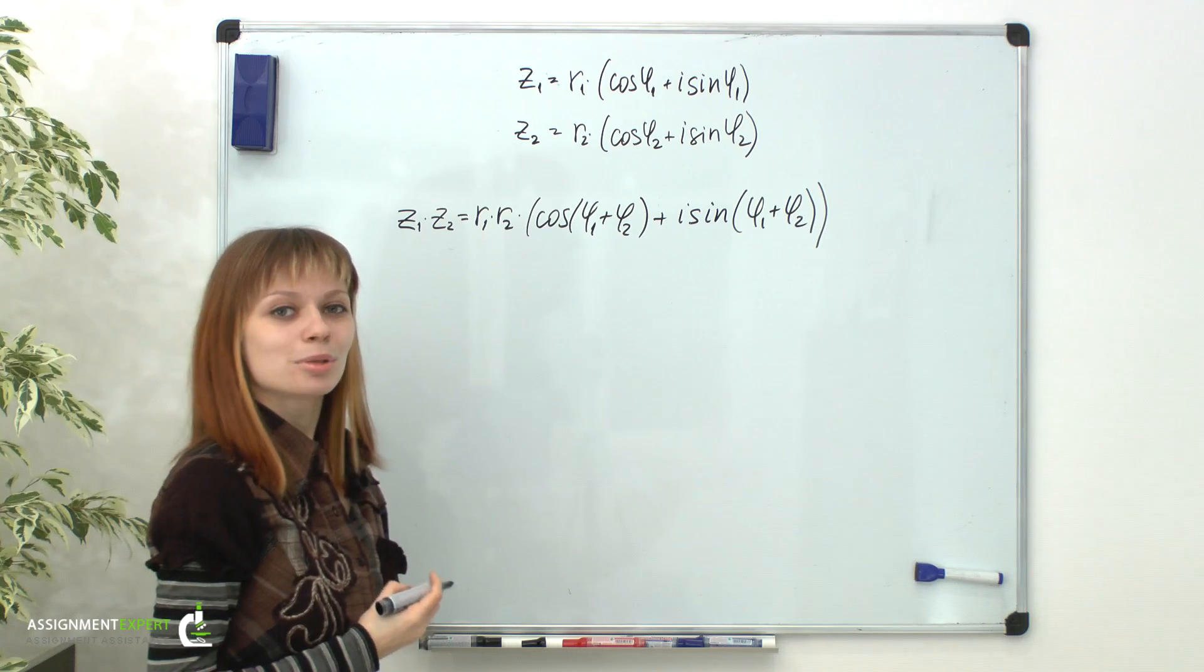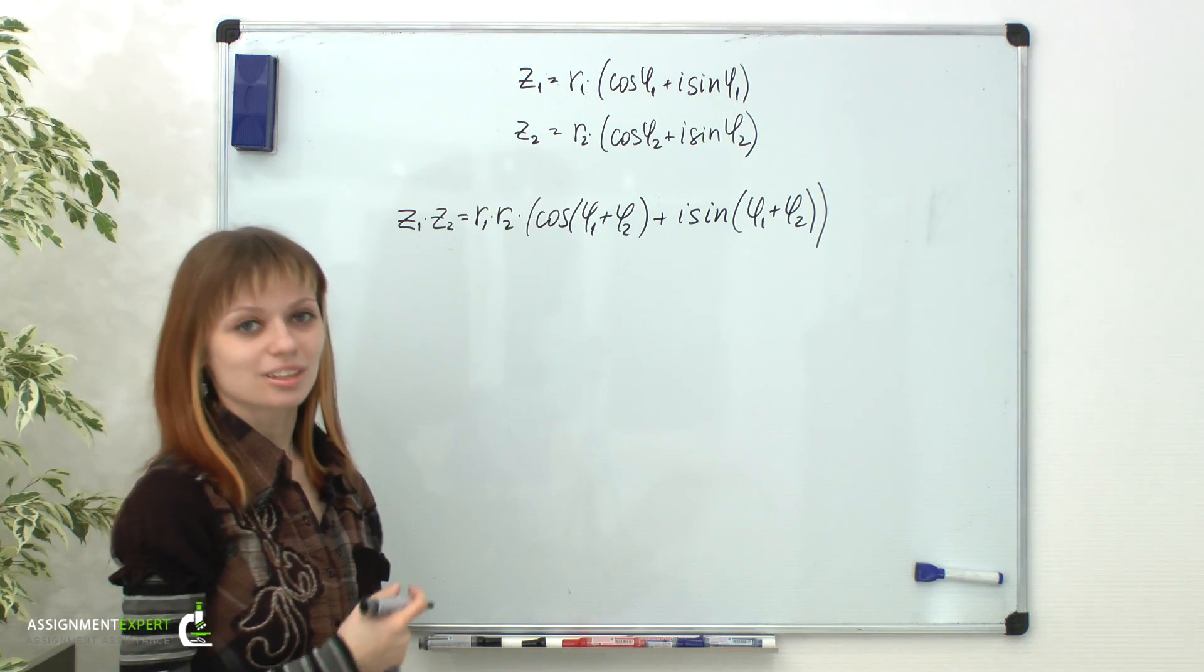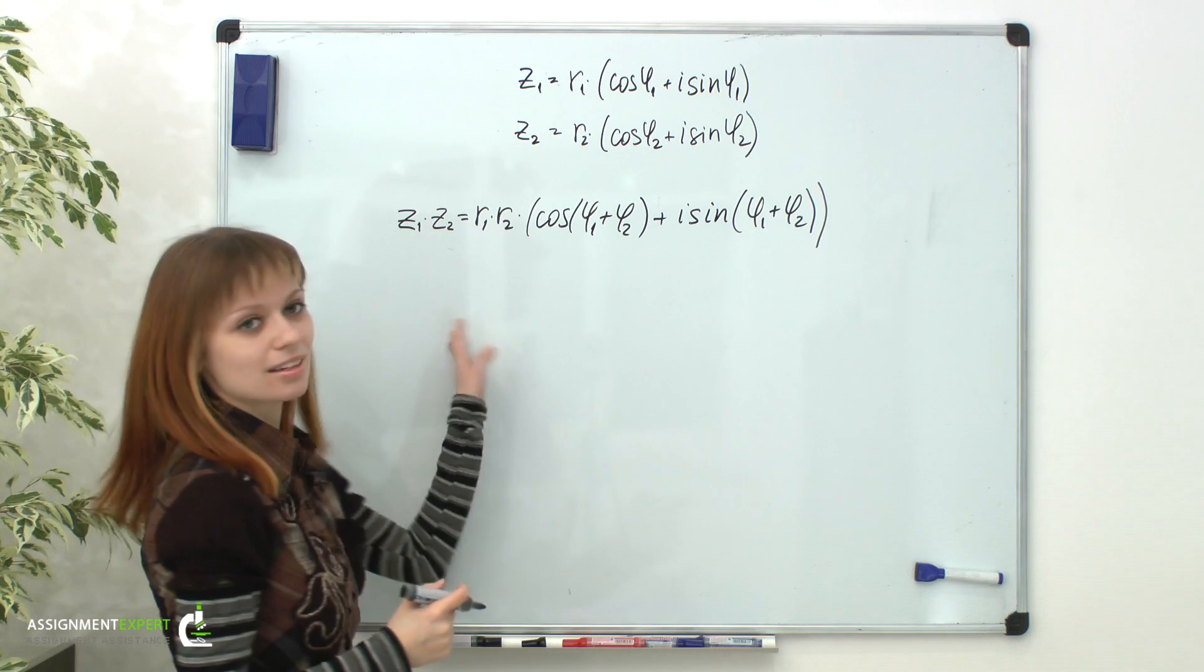Obviously, if we want to multiply more than two complex numbers in trigonometric form, we need to act exactly as before.